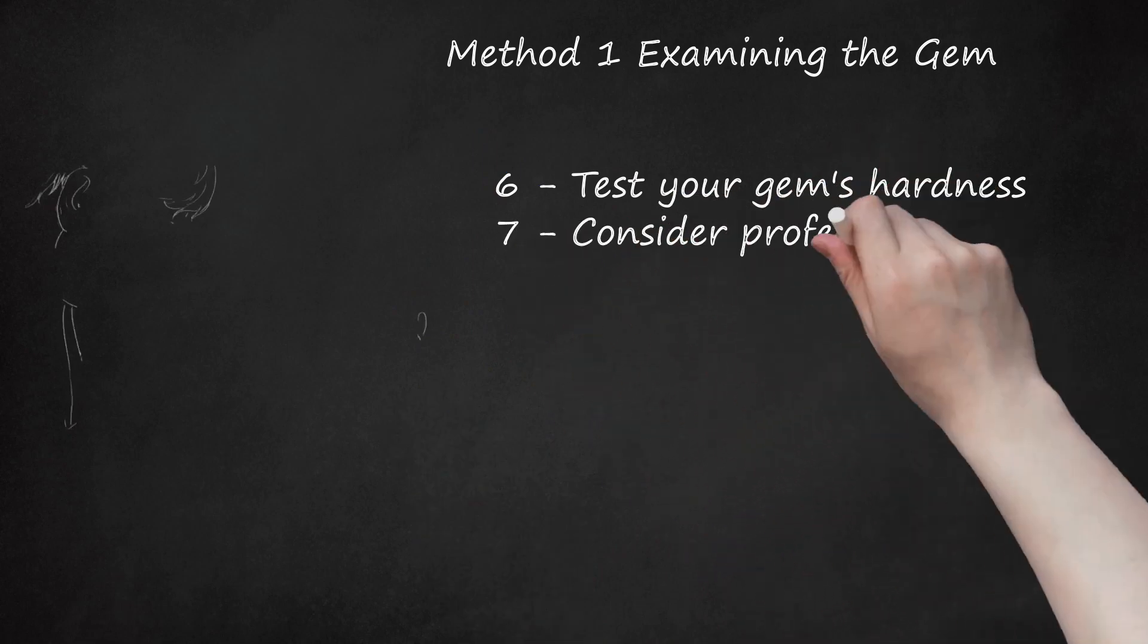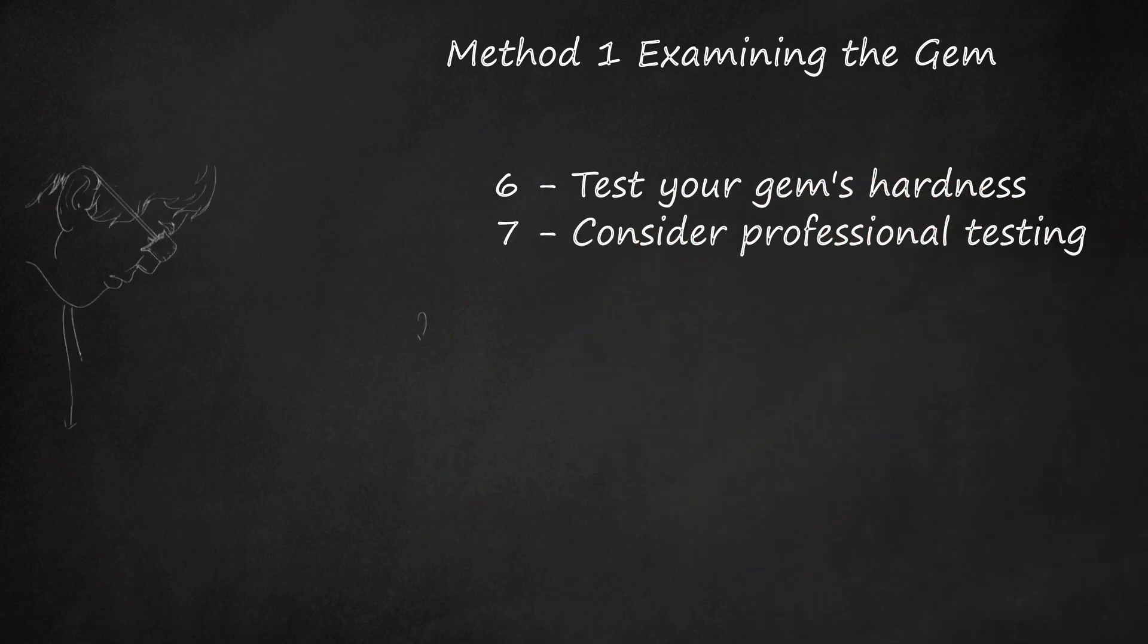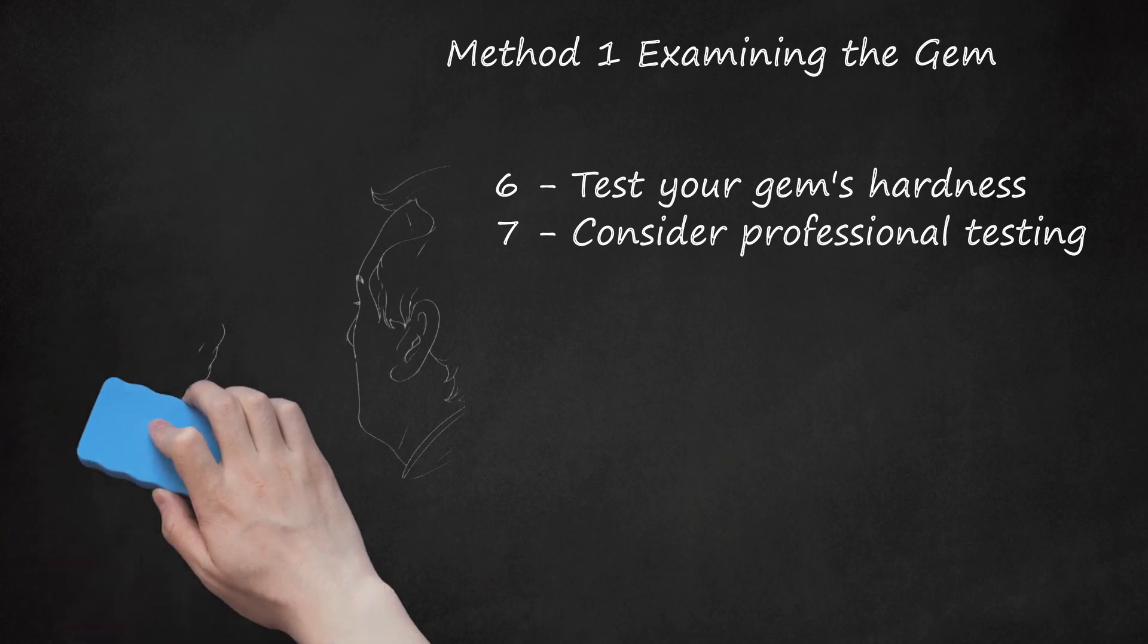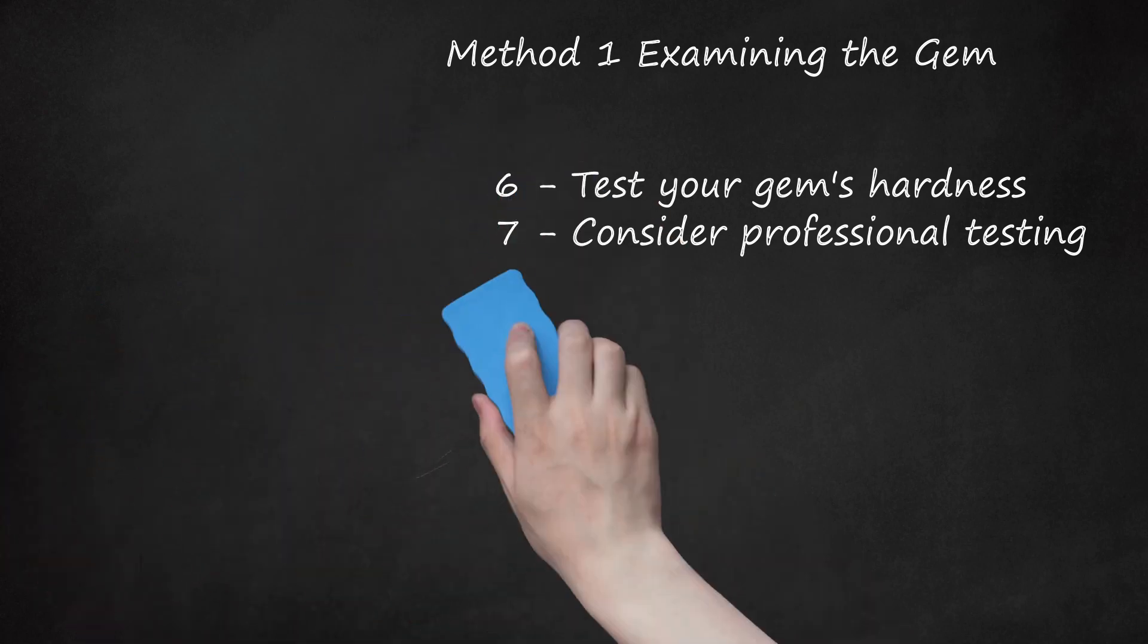7. Consider Professional Testing. The only way to be completely sure of the authenticity of amethyst is to have it tested. You can take your amethyst to a local jeweler and ask him or her about lab identification. Cost varies depending on the size of your gem. If you're concerned about authenticity, it may be worth the cost to know for sure. Professional testing can ascertain whether an amethyst came from a geode. Many amethysts originally came from geodes.